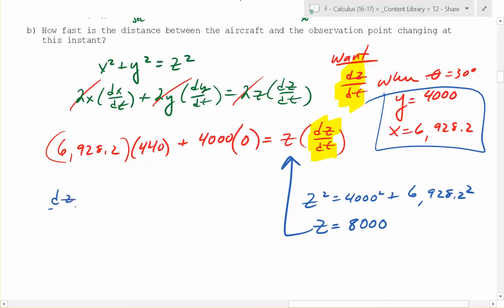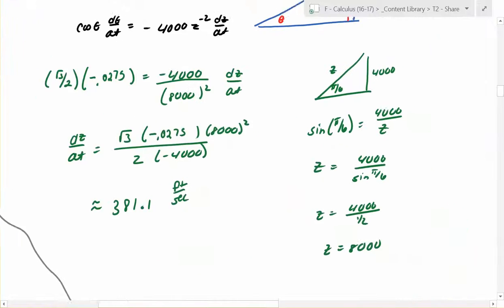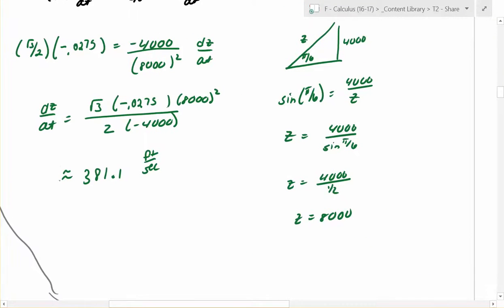And then you solve for dz dt. And what did you guys get? You guys got 381.051 feet per second. Good. I like how you put the numbers in there. Let's check that with the answer over to the left here. And what did you get? Let's see. Hey, look at that. Take a look. Is that what we should have?